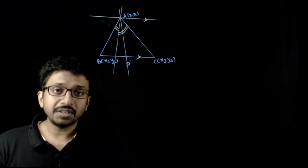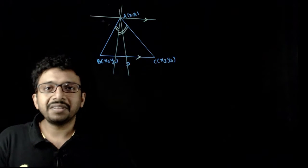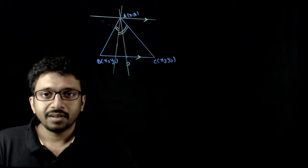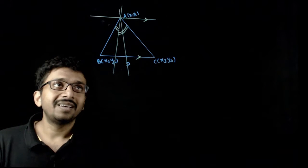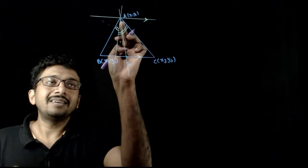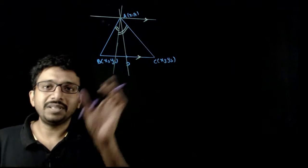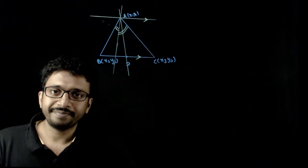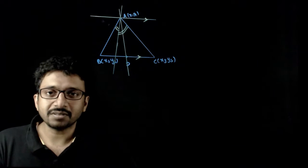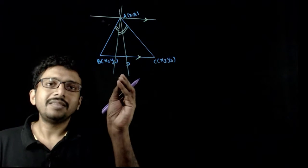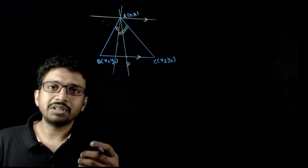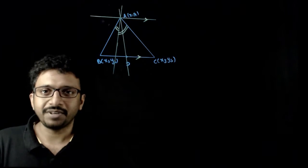Welcome students. In this question, given that you have a triangle whose vertices are (x1, y1), (x2, y2), and (x3, y3), you are asked to find the equations of the median AD, the line through A parallel to BC, and the angle bisector of A using determinants. You are asked to show that the equations of these lines are so and so. Let us try to find the equations of each line using the method of determinants.